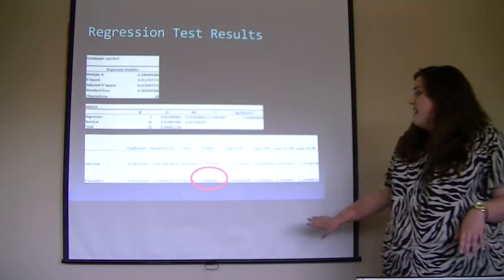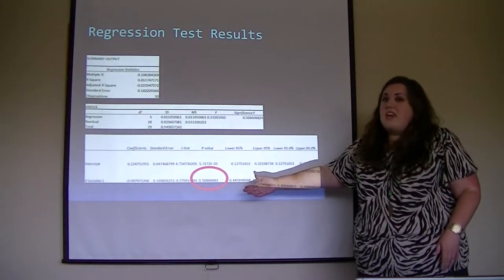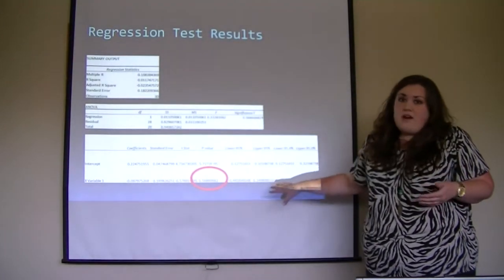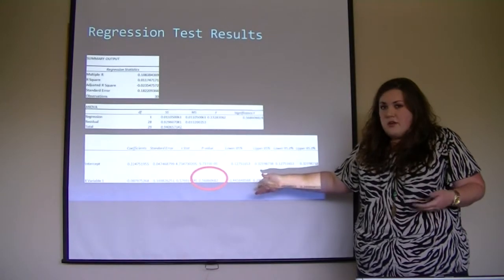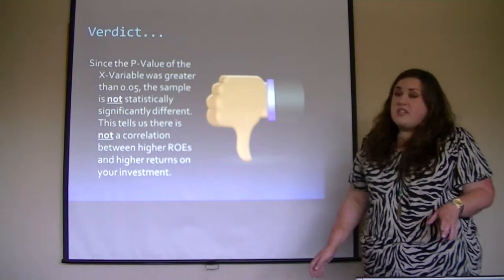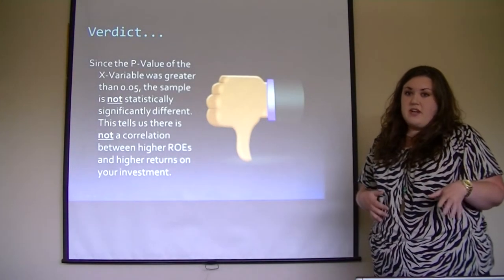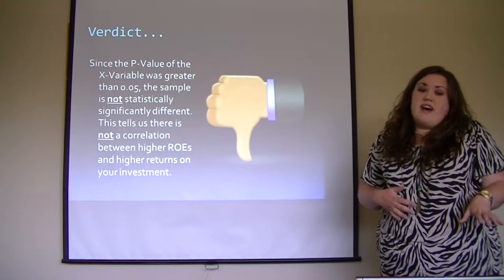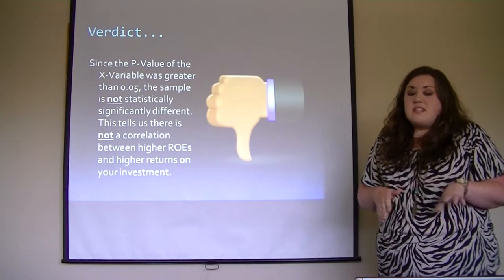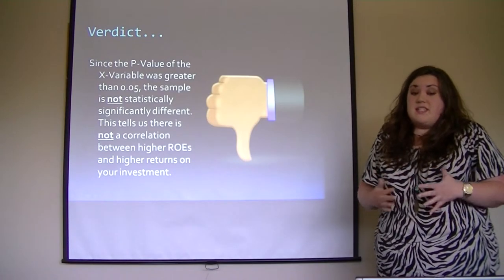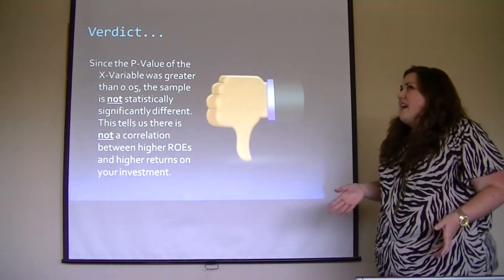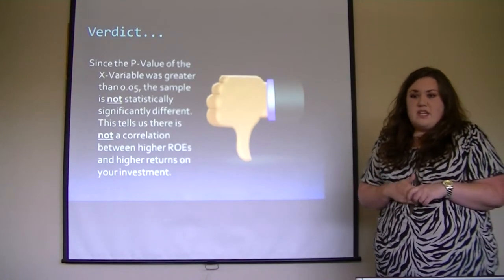Looking at the X variable 1 in the regression output, the p-value of the X variable is 0.56. In order for this to be statistically significant, the p-value would need to be less than 0.05. As you can see, it is not—it's much higher. The verdict: since the p-value of the X variable was greater than 0.05, the sample is not statistically significantly different, meaning there is no statistical correlation between a higher return on equity and a higher return on investment.